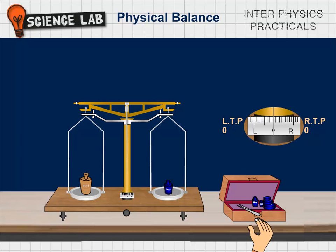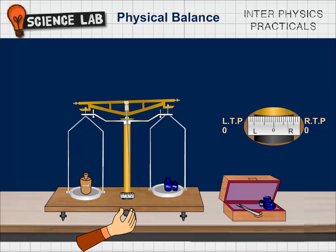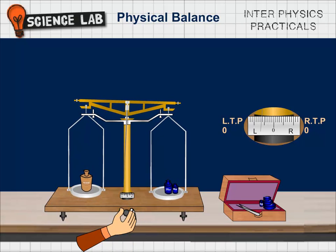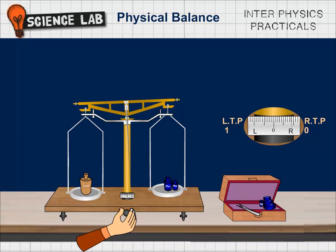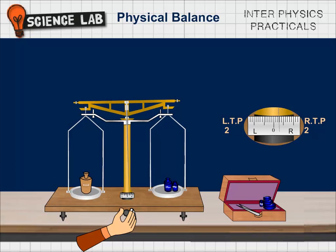We obtain a HRP from the calculations so add weight to the right pan. Again note down the three LTPs and two RTPs. Calculate the averages and calculate the mean of the averages.